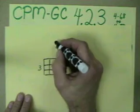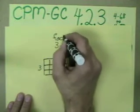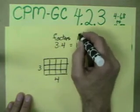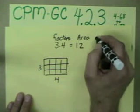of 12 where these are the factors and this is the area or the product.